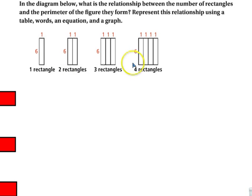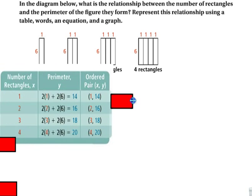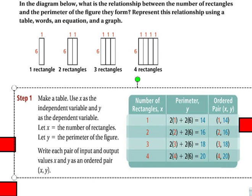So in this diagram below, what is the relationship between the number of rectangles and the perimeter of the figure they form? So we are to do three things. We are to represent it using a table, using words, an equation, and a graph. So we look at it. We say, okay, there's one rectangle, and its perimeter is 14. There are two rectangles, and its perimeter is 16. There are three triangles, and its perimeter is 18. So what we have is we have this. Okay, we have a table.